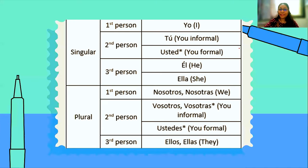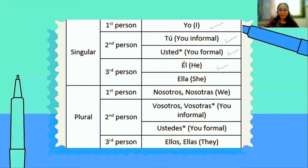Let's quickly recap. First person singular — talking about myself — is 'yo.' 'Tú' is informal 'you,' talking to a friend or someone younger. 'Usted' is formal 'you' — talking to a teacher, principal, parents' friend, or someone you've met for the first time. He in Spanish is 'él'; she is 'ella.' For 'we': masculine is 'nosotros,' feminine is 'nosotras,' and for a mixed group always use masculine 'nosotros.' In Spain, 'you all' informal masculine is 'vosotros,' feminine is 'vosotras.'